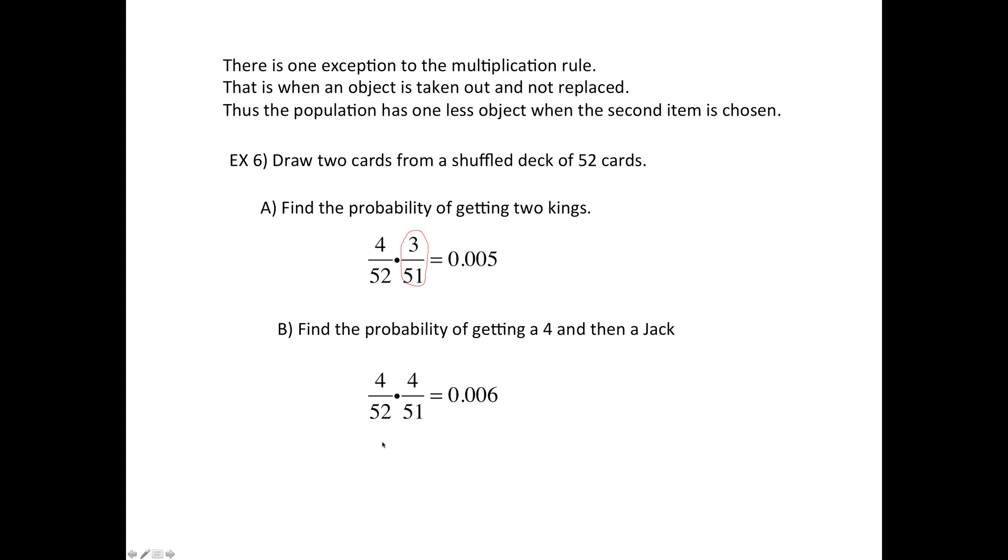Then think about the second card. So since one card has been taken out of the deck, there's only 51 cards left. So it has to be out of 51. But the second card has to be a jack. And how many jacks are left? There's four jacks still left. And then put that in the calculator. You'll get 0.006.